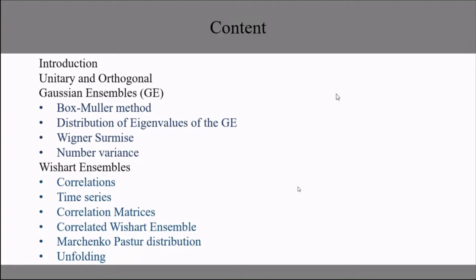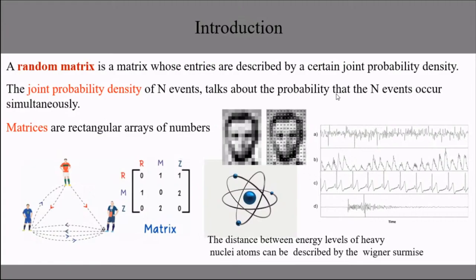And number variance, which is a method to study fluctuations of the eigenvalues. Also the Wishart Ensemble, correlations, time series, correlation matrices, the Correlated Wishart Ensemble, the Marchenko-Pastur distribution, and unfolding. I am not going in historical order, because Wishart started to work before Wagner, who developed the Gaussian ensembles.